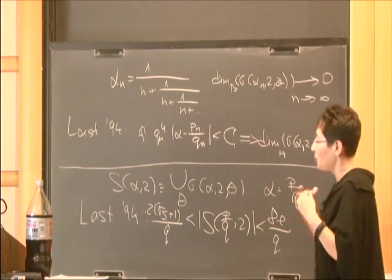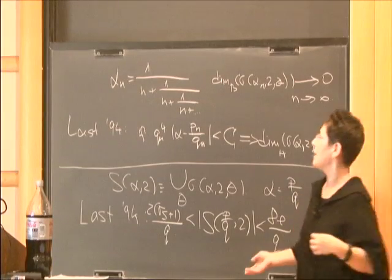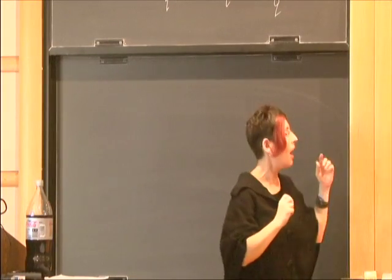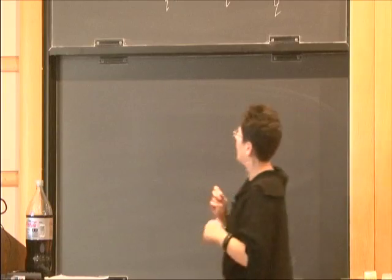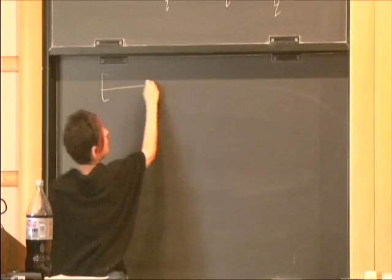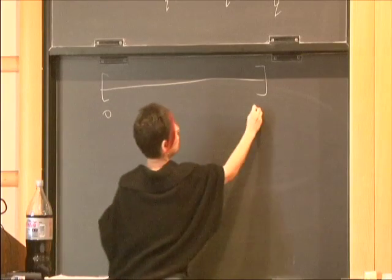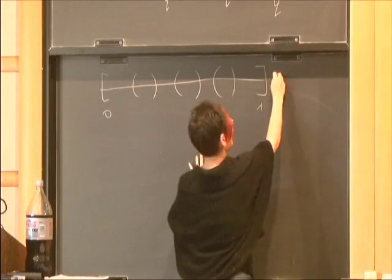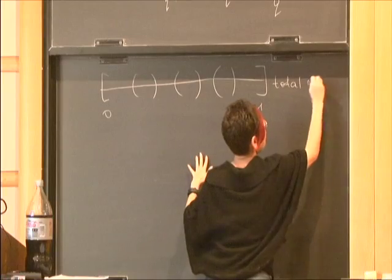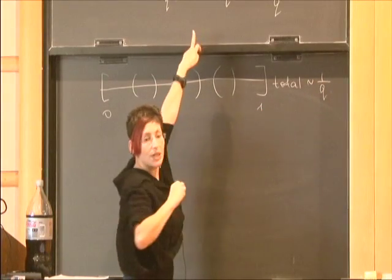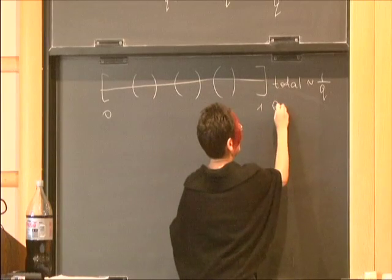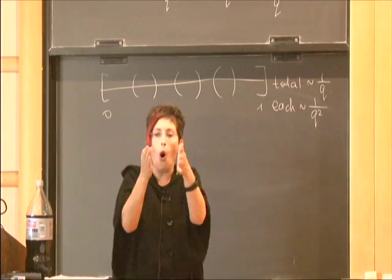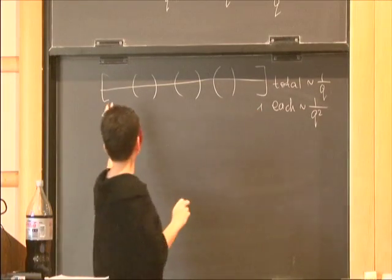And I will explain what I mean by distribution of the lengths on two examples. First one is the kind of intuition which is behind the half conjecture. Suppose we are constructing a Cantor set on an interval [0,1] as follows. We remove q minus 1 gaps in the way that the total length of the bands is approximately 1 over q, which is from the result of Last. And the length of each band is approximately 1 over q squared. So all the lengths are even.